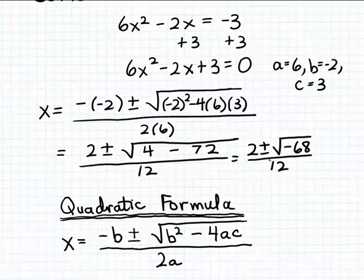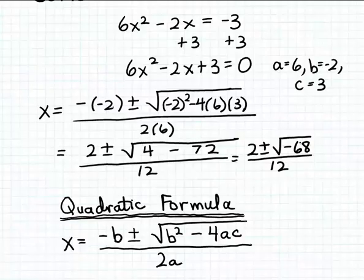Here we can see that the two solutions to our equation are going to be complex numbers, because in applying the quadratic formula we come up with the square root of a negative quantity, and of course that's going to be imaginary. So the solutions to our equation are going to be complex numbers.